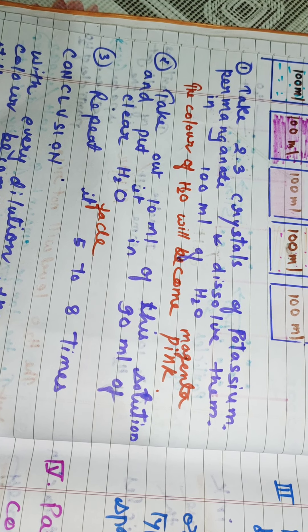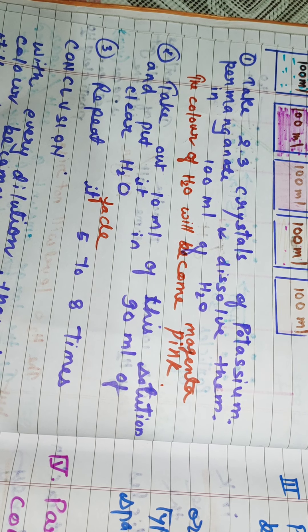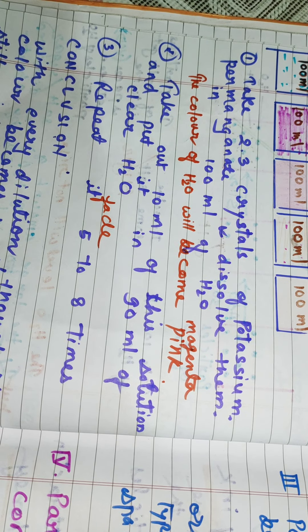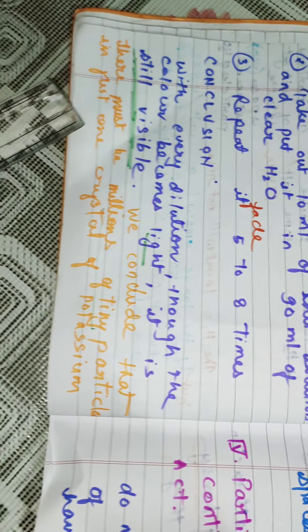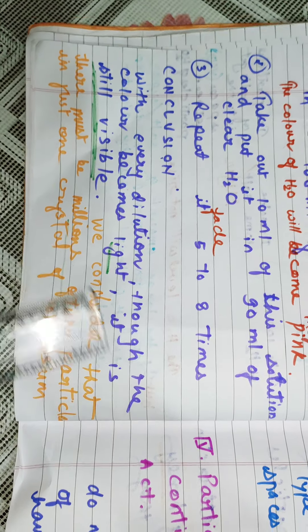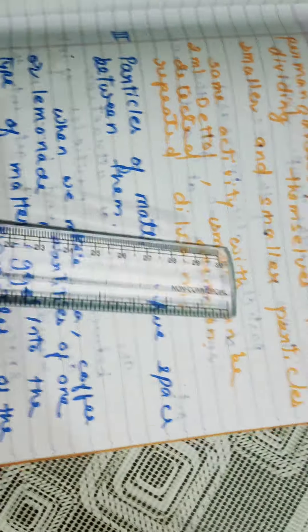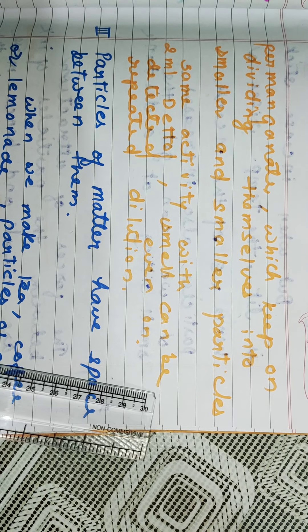The conclusion is that with every dilution, though the color becomes light, it is still visible. This means there must be millions of tiny particles in just one crystal of potassium permanganate, which keep on dividing themselves into smaller and smaller particles.